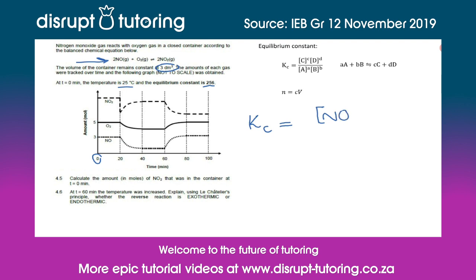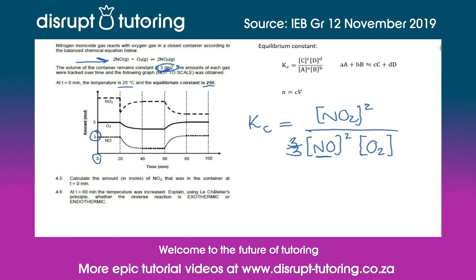We have nitrogen dioxide raised to the power of 2, divided by the concentration of the reactants: nitrogen monoxide raised to the power of 2, multiplied by oxygen gas. Substituting in our known values, the concentration of nitrogen monoxide is 3 moles divided by the volume of 3 dm³, so that's (3/3)². For oxygen we have 5 moles divided by 3 dm³, giving (5/3). The equilibrium constant is 256.